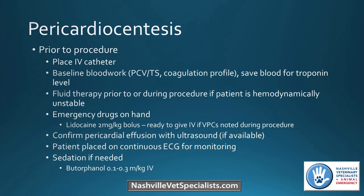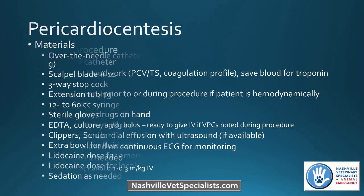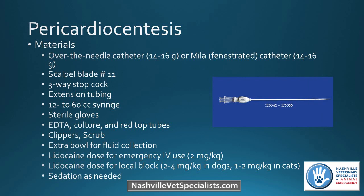Always have emergency drugs ready — 2 mg/kg of lidocaine ready at the tip of the catheter — and have someone watch the ECG during the procedure. Confirm effusion with ultrasound before tapping, and have the patient on ECG to look for VPCs. I almost always sedate these patients — usually just a little butorphanol, but sometimes more. Equipment is similar to thoracocentesis, but you'll additionally need a scalpel blade and lidocaine — both for emergency dosing and a local block, since the needle goes further in. In dogs, I use 2-4 mg/kg for the local block; in cats, lower doses due to neurotoxicity.